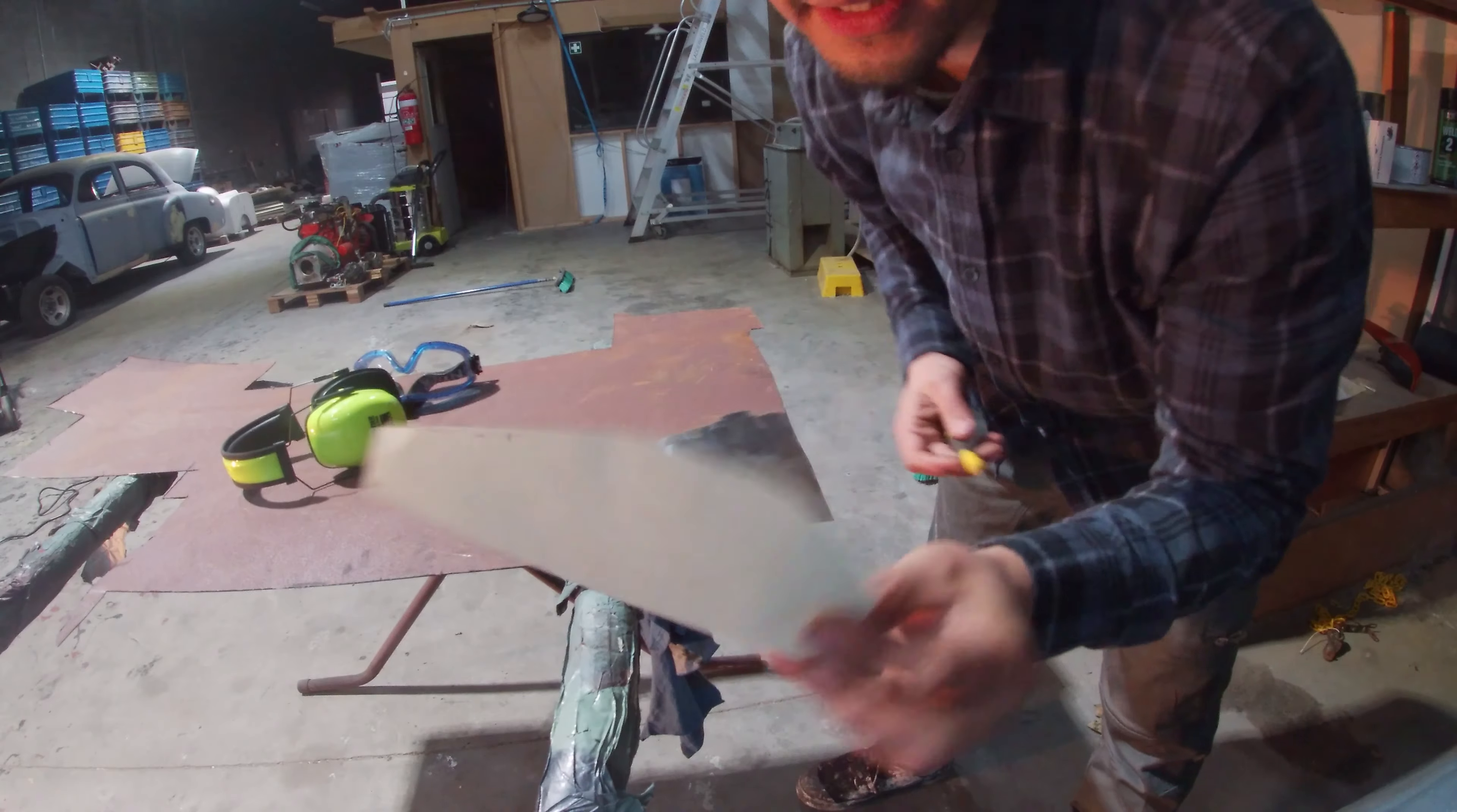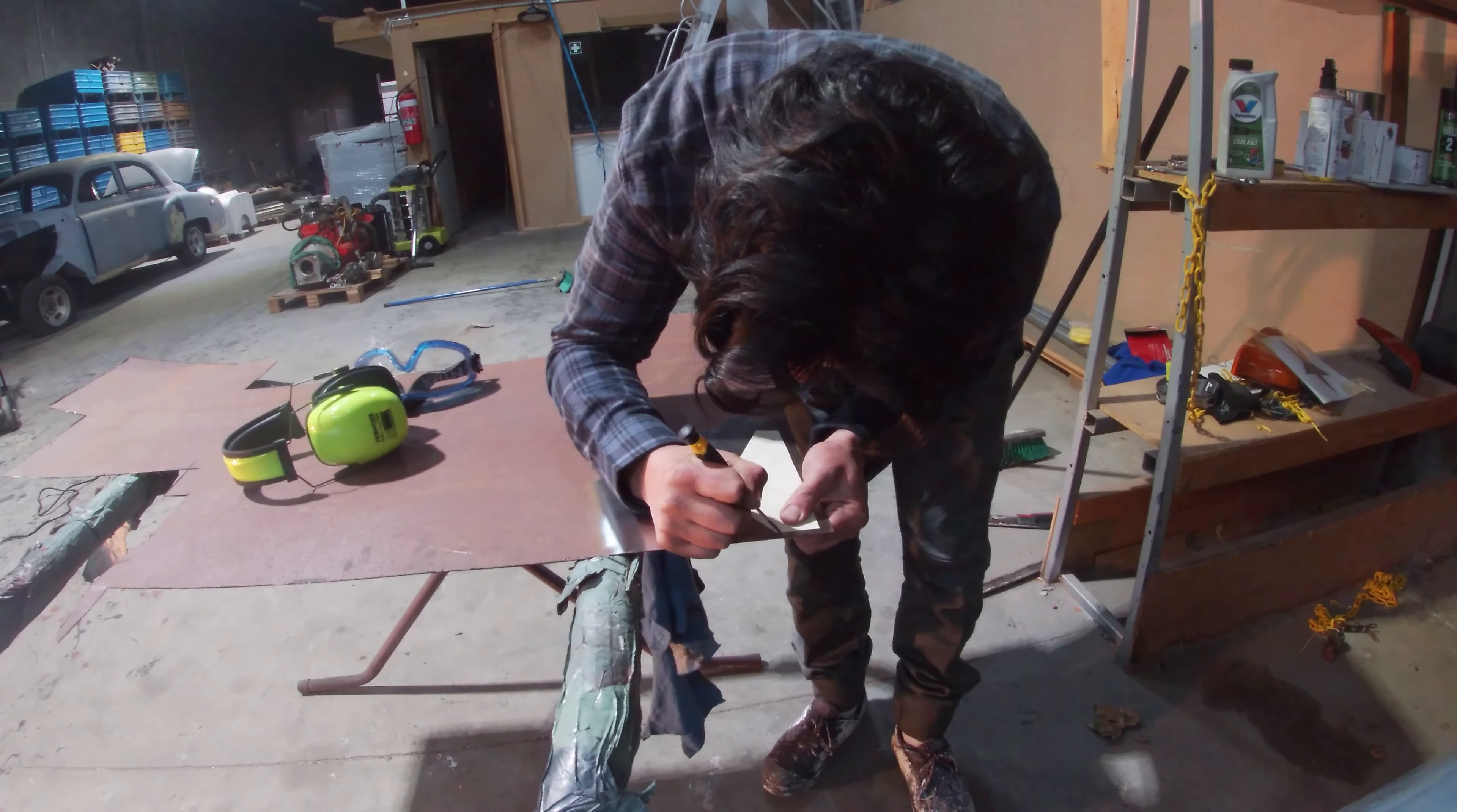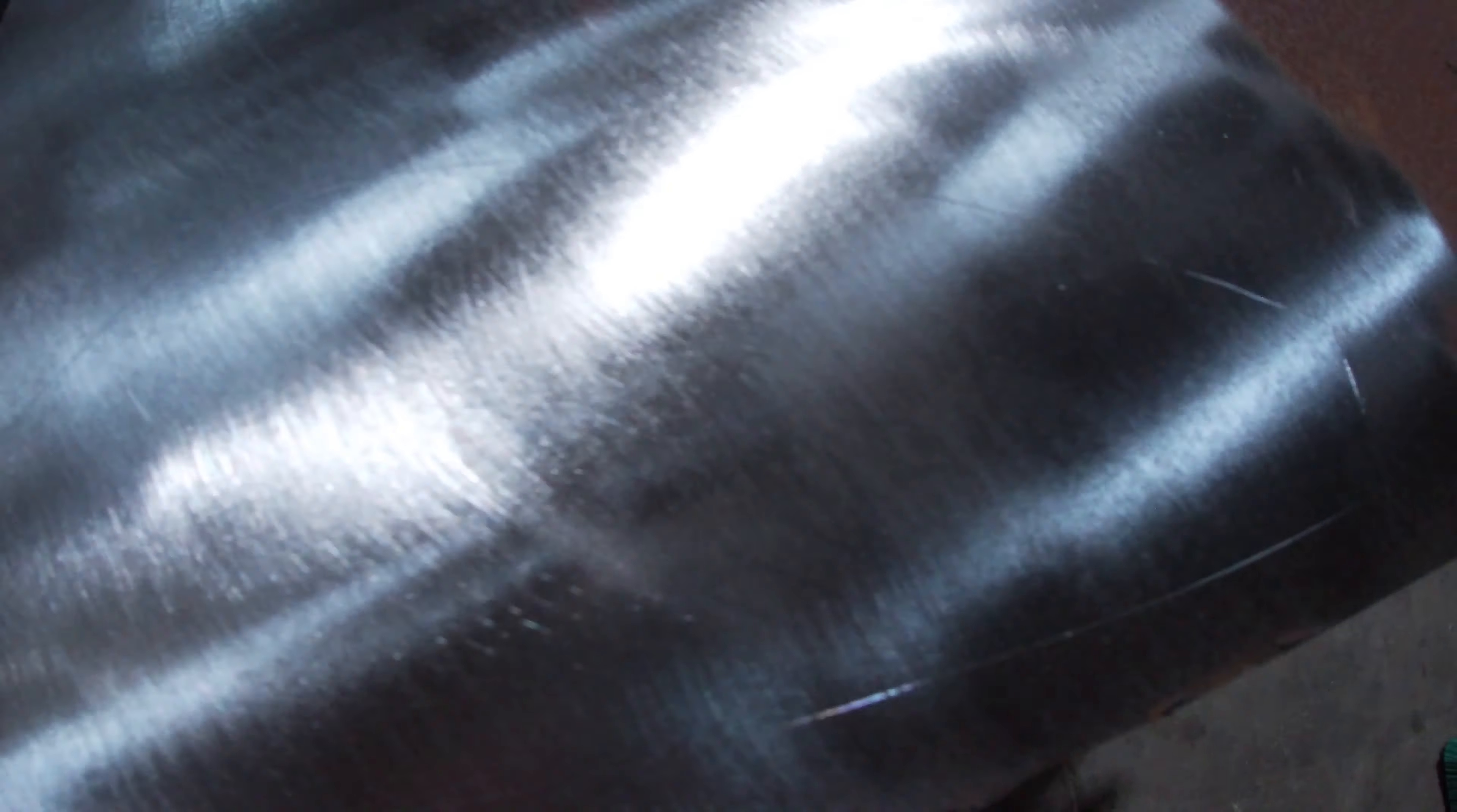Alright, cleaned the middle, got my template. Now you need something to scribe it, just something sharp. I don't know where my scribe is, it's probably at home. Don't know whether you can see that, this is the outline of the template there and we're going to cut along that.